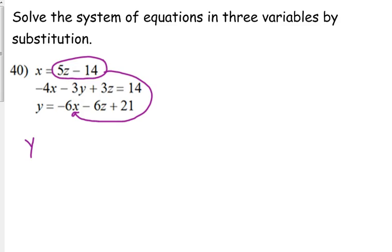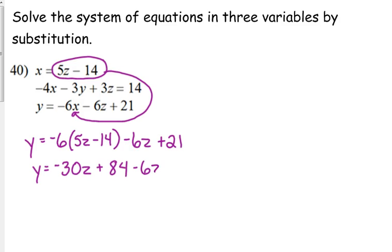So if I plug that in for x, we've got y equals negative 6 times 5z minus 14 minus 6z plus 21. Now I'm going to go ahead and simplify that. So distribute the negative 6,